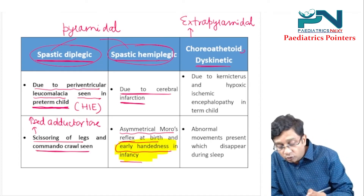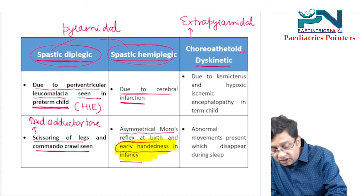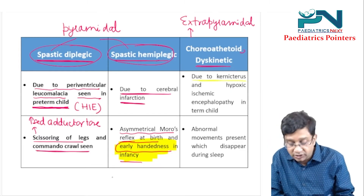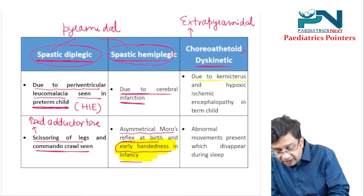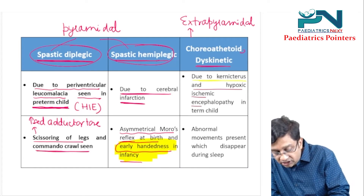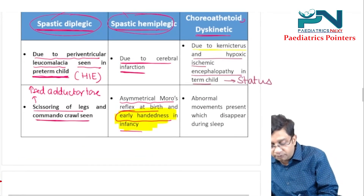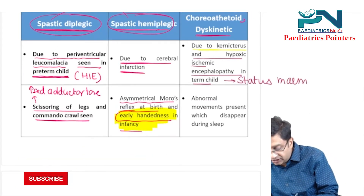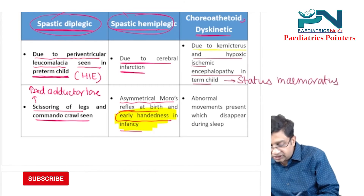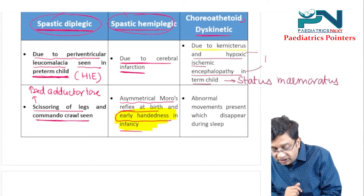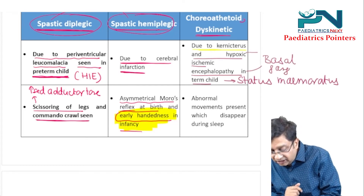Choreoathetoid type is caused by three reasons: kernicterus, which damages the basal ganglia; hypoxic-ischemic encephalopathy in a term child causing status marmoratus; and status marmoratus itself. Both kernicterus and status marmoratus damage the basal ganglia.